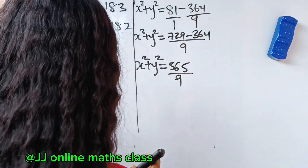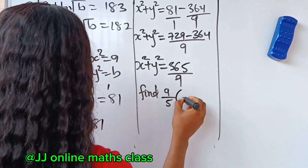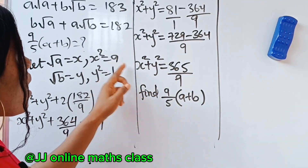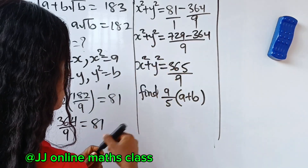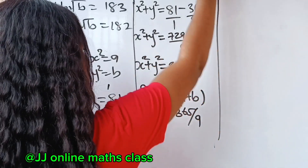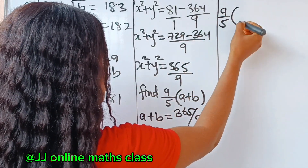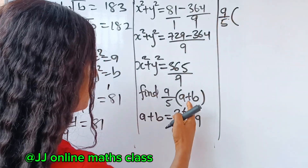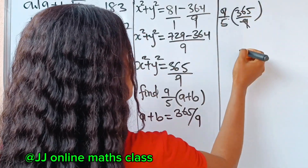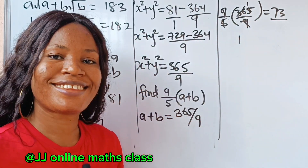Back to our question — we are asked to find 9 over 5 multiplied by a plus b. Recall that x squared equals a and y squared equals b, so a plus b equals x squared plus y squared equals 365 over 9. Substituting into the expression: 9 over 5 times 365 over 9. The 9's cancel, giving 365 over 5, which equals 73. There you have it.